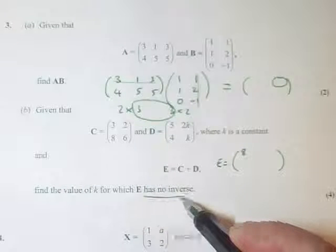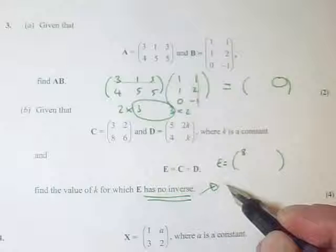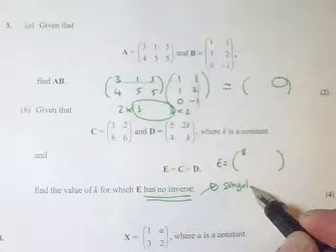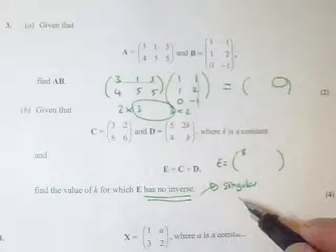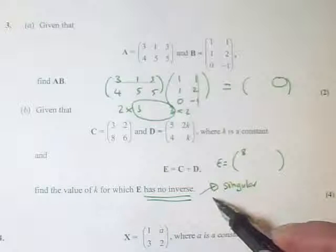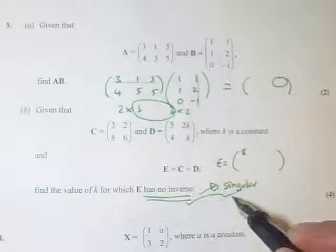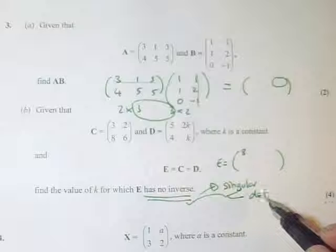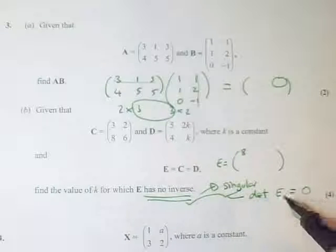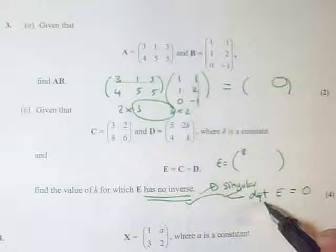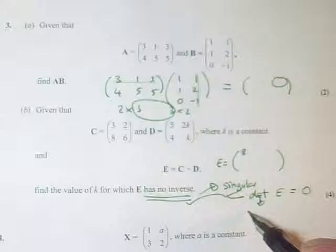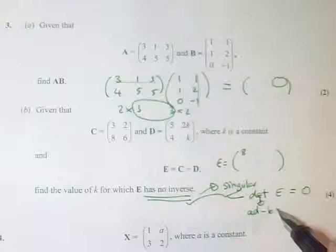And then it has no inverse. So these are trigger words. If it has no inverse, that means it's singular, which you don't have to think of. But you do have to realize that both of these things mean that the determinant of the matrix is 0. So the determinant of the matrix, remember the determinant is just the answer to AD minus BC.